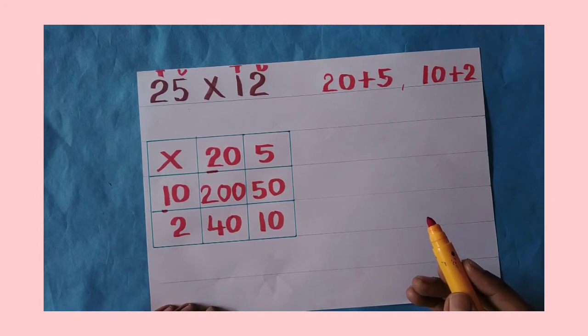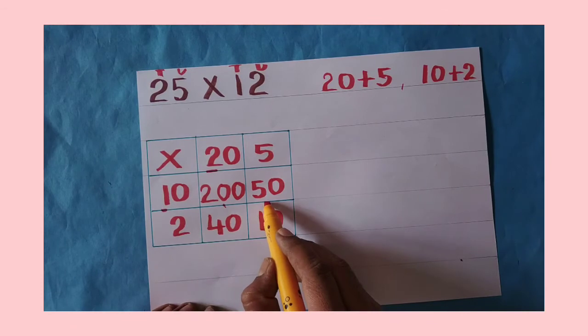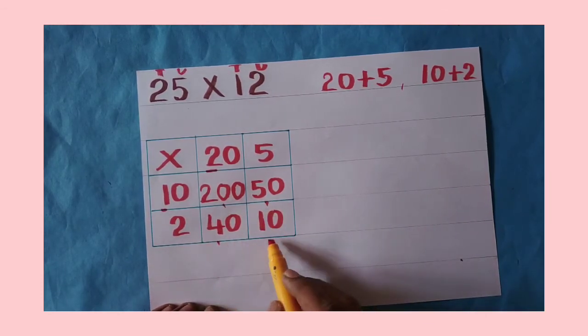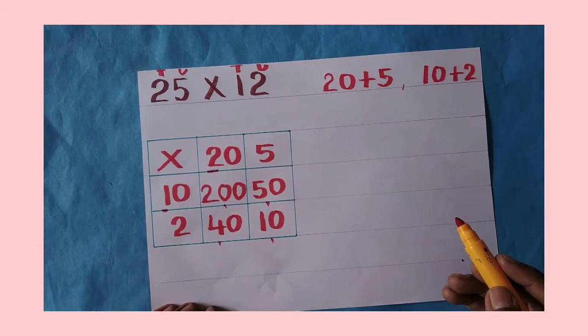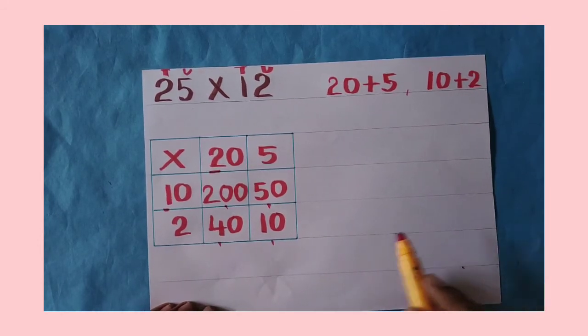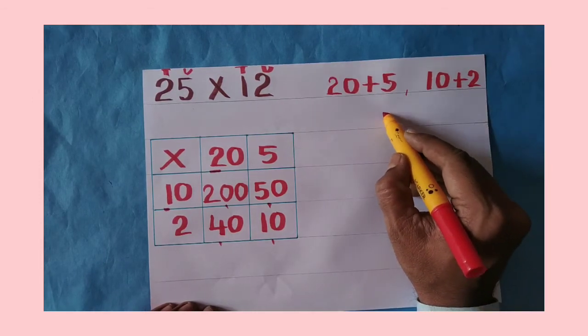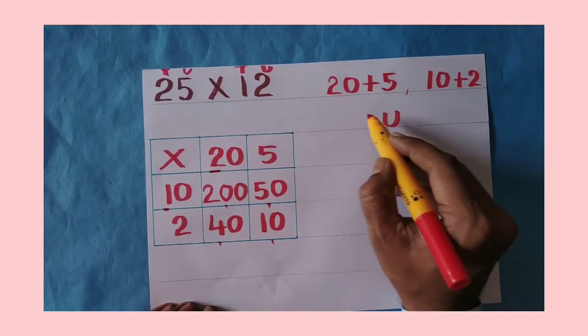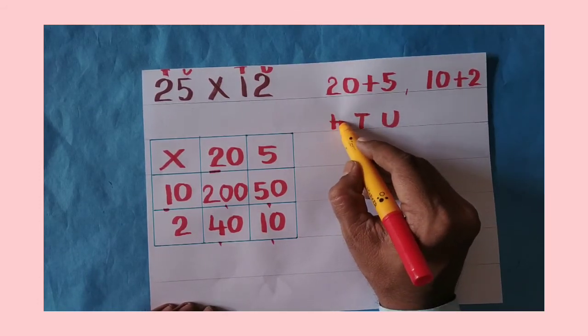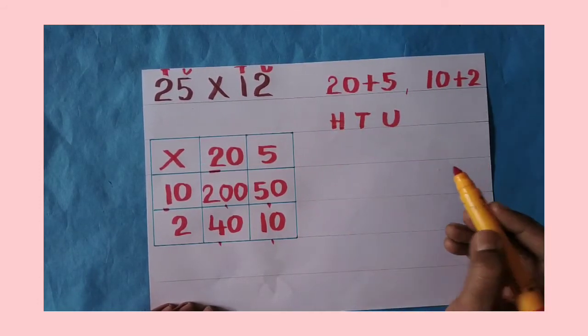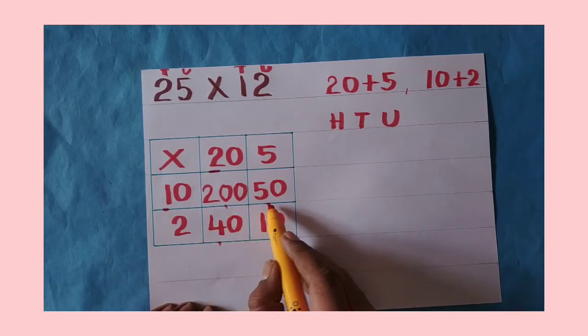Finish. After that, what you have to do: whatever answer you got, you need to write it in vertical arrangement so you can easily do addition. There are three places, so write three places so that it will be easy for you to arrange.